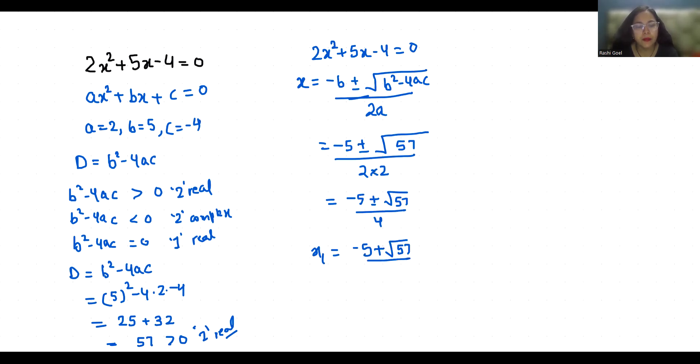x₁ is -5 + √57 / 4 and x₂ is -5 - √57 / 4. These are the two real solutions. I hope it's clear and you find it useful. So please give us a thumbs up and subscribe to my channel. Stay tuned for more upcoming videos.